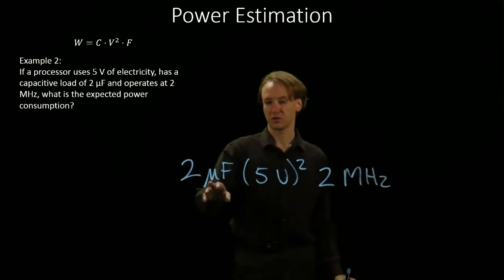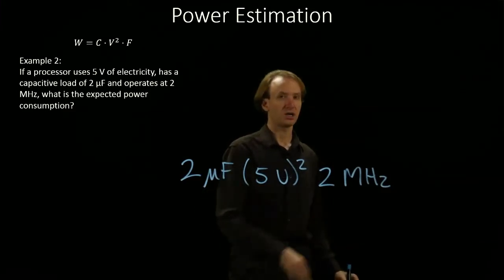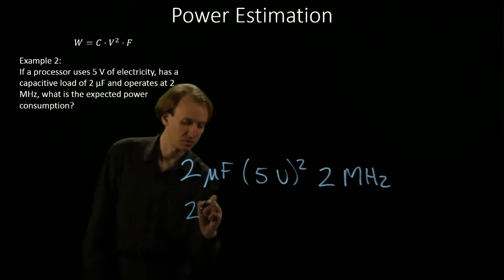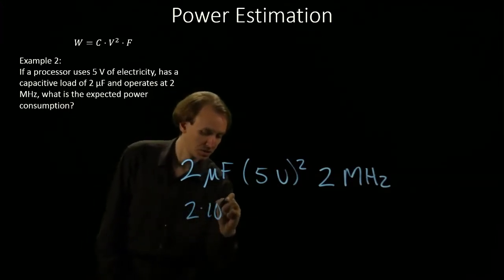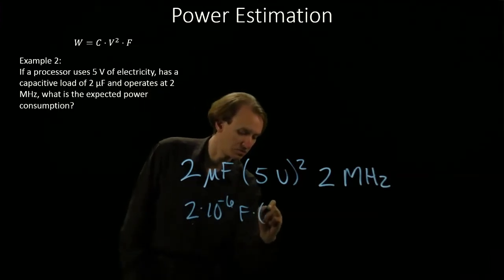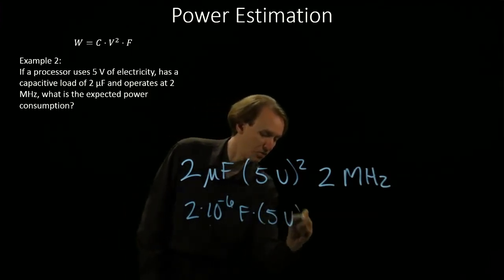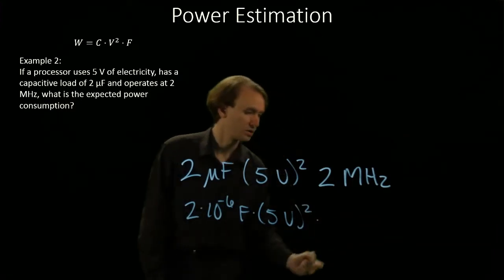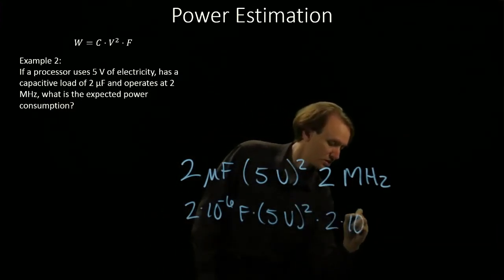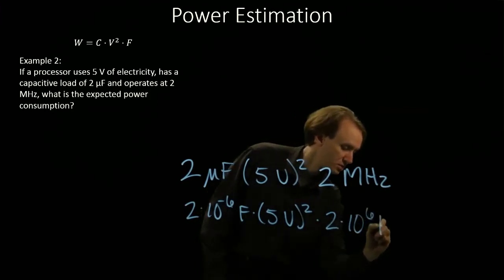So again, we'll want to convert our micro and our mega into actual numbers that we can work with. We'll have 2 times 10 to the minus 6th farads times 5 volts squared times 2 times 10 to the 6th hertz.